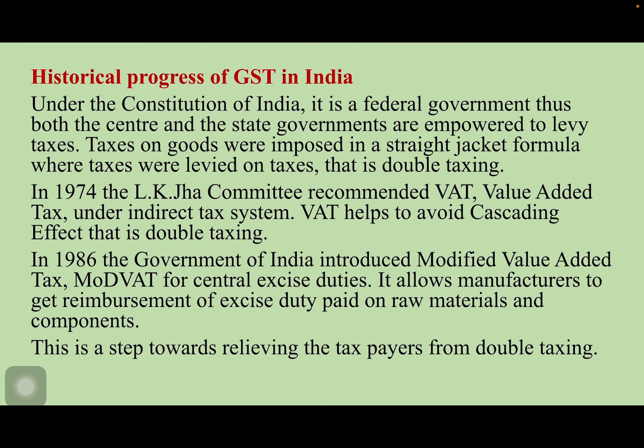Now, how did GST come into existence? Let us look into its history. Under the Constitution of India, ours is a federal government. Thus, both central and state governments are empowered to levy taxes. Taxes on goods were imposed in a straight-jacket formula where taxes were levied on taxes, that is double taxing. In 1974, the LK Jha Committee recommended VAT — Value Added Tax — under the indirect tax system. VAT helps to avoid the cascading effect, that is double taxing. In 1986, the Government of India introduced Modified Value Added Tax, popular as ModVAT, for central excise duties. It allows manufacturers to get reimbursement of excess tax paid on raw materials and components. This was a step towards relieving taxpayers from double taxing.